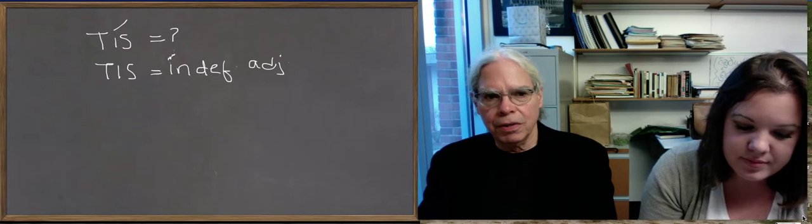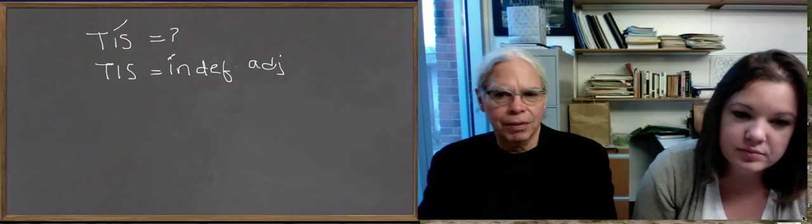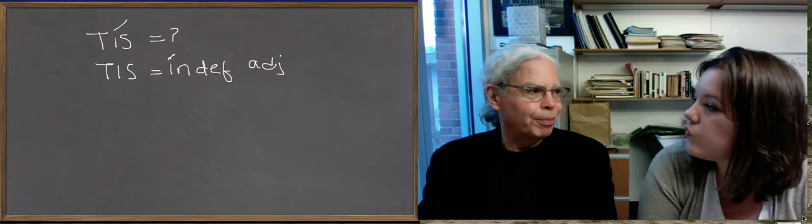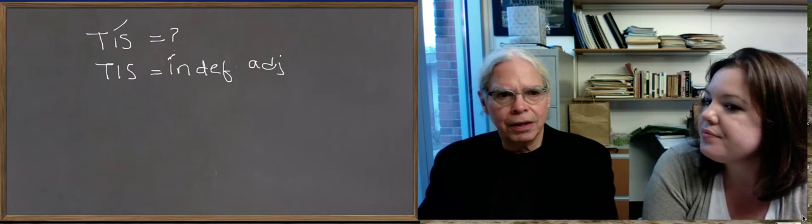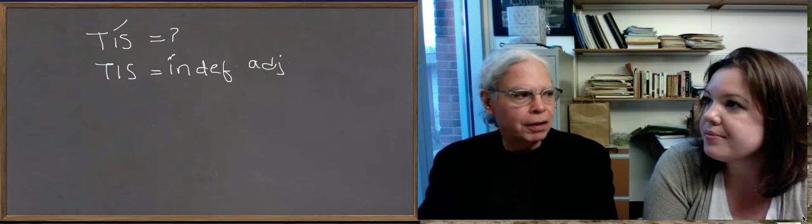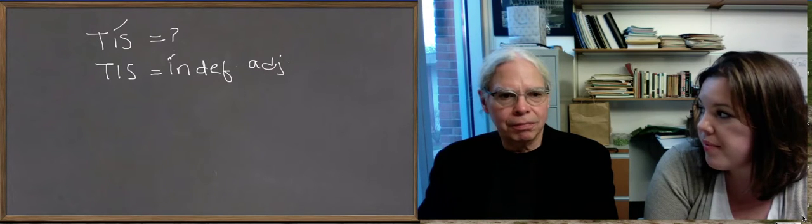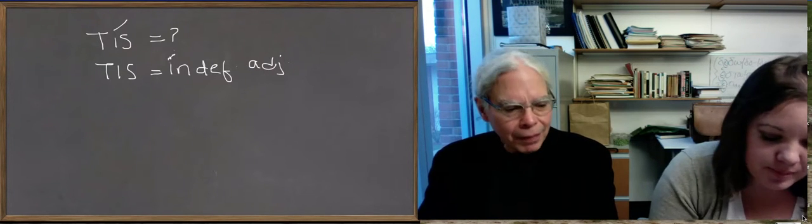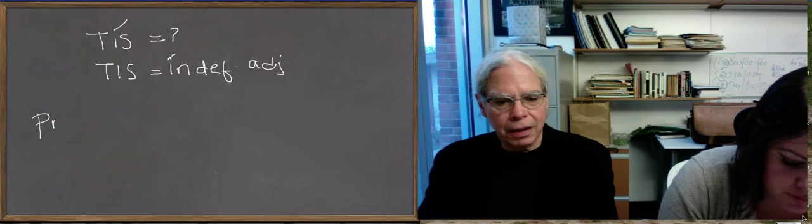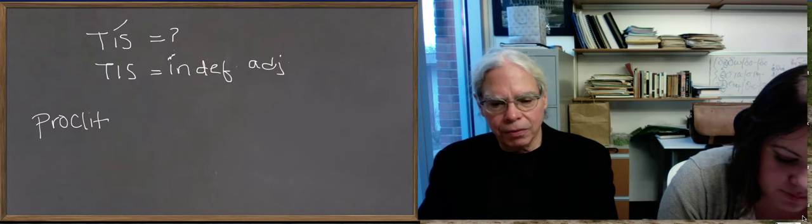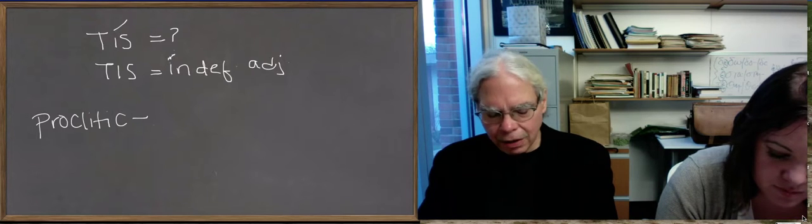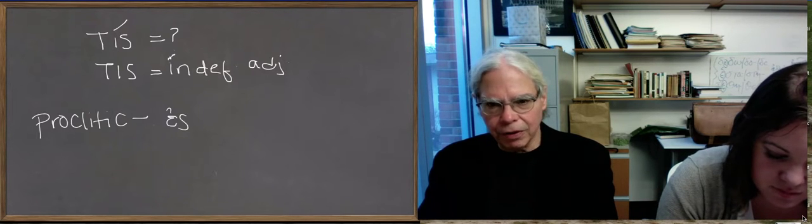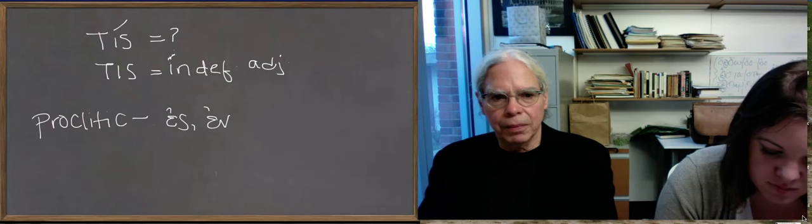Because we need to understand how we can have the same word have such different meanings and still be differentiated by the speakers and the hearers of the language. And in order to do that we have to talk about this concept of an enclitic, which, remember there are two kinds of words. There are two kinds of unaccented words in Greek. There are proclitics, might want to write this down, and enclitics.